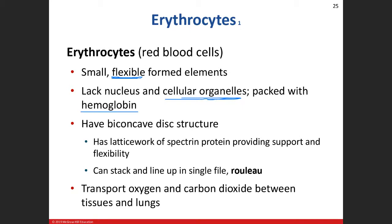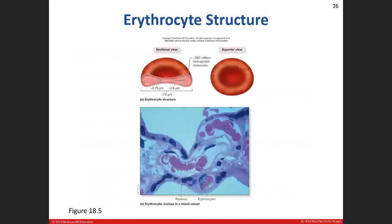The main thing at the center of the hemoglobin molecule is going to be iron. We describe the red blood cell itself as a biconcave structure — like a donut with no hole in the middle, where the center is very thin.